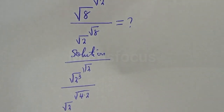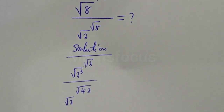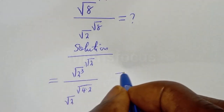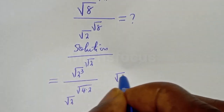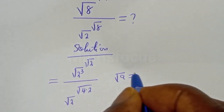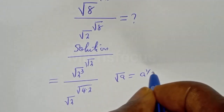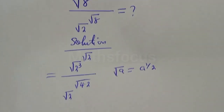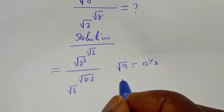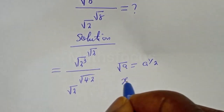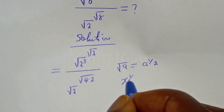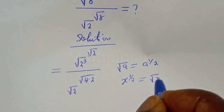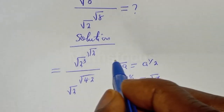Take note that if you have square root of x, this is equal to x raised to the power of 1 over 2. And if you have x raised to the power of 1 over 2, this is equal to the square root of x.